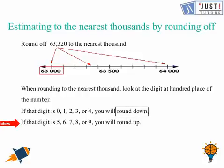This is what we need to be careful about. And as you can see that in this number it was 3 sitting at the hundreds place. So we did round down of the number and the answer was 63,000.